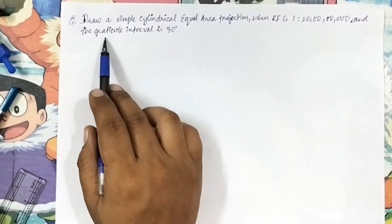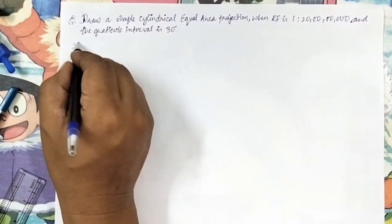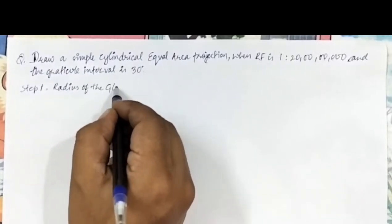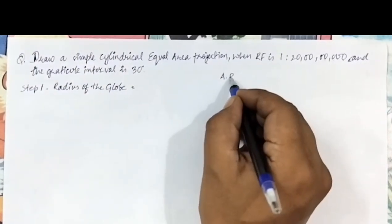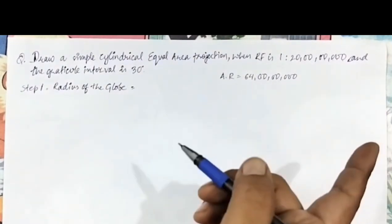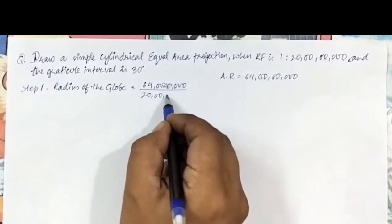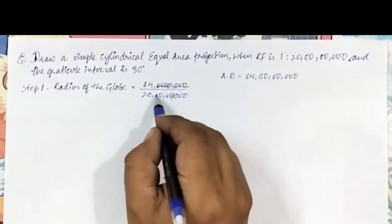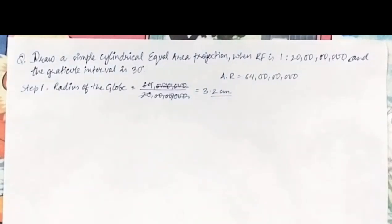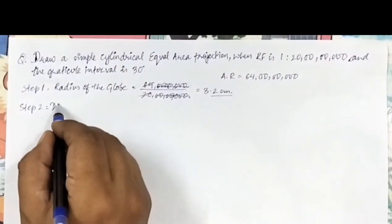So without any further delay, let us start. According to the question, the scale given to us is 1 is to 20 million, and the graticule interval is 30 degrees. The first step is finding the radius of the globe. The actual radius of the globe is 64 million, which is constant and will never change. We divide 64 million by 20 million — the given scale — and we get 3.2 centimeters. So 3.2 centimeters will be the radius for the globe.